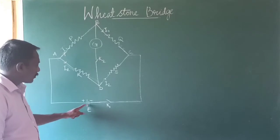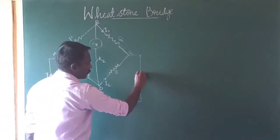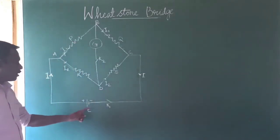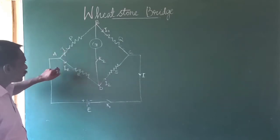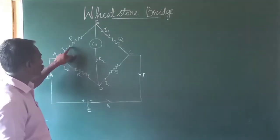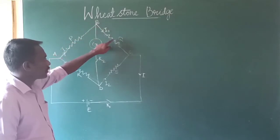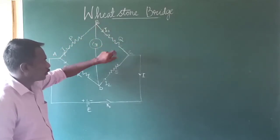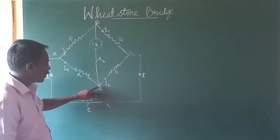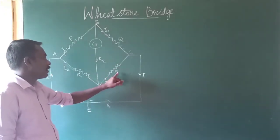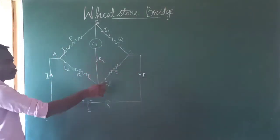The electric current flows from the battery. A current I is flowing through the circuit and it reaches point A, where the current divides into I1 and I2. I1 is flowing through the resistor P to point B, and I1 reaches point C through the resistor Q. From point A, a current I2 is flowing to point D through the resistor R, and again D to C through the resistor S. At point C they join, and the same amount of current circulates through the bridge.